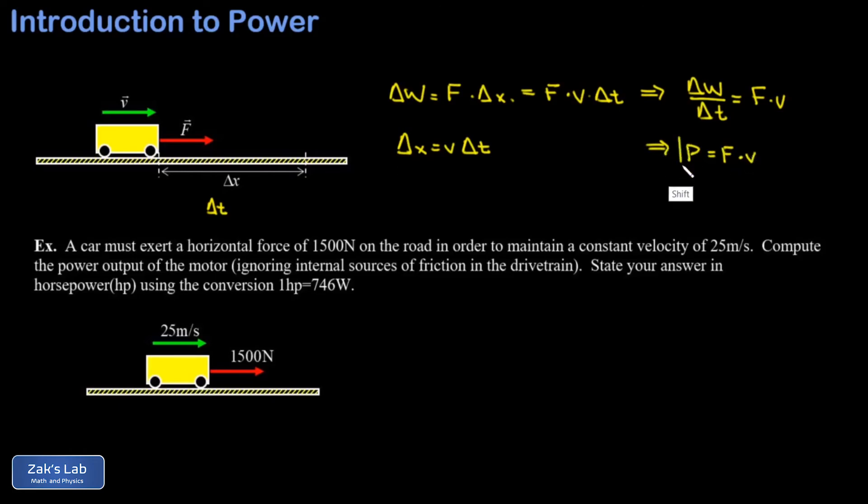Finally we work an example of how to use this formula. We're told the car must exert a horizontal force of 1500 newtons on the road in order to maintain a constant velocity of 25 meters per second. We want to compute the power output of the motor.